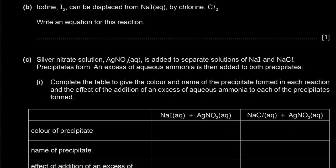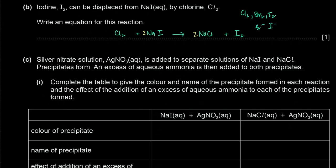Iodine can be displaced from sodium iodide by chlorine: Cl₂ + 2NaI → 2NaCl + I₂. This is a redox reaction. Chlorine is the strongest oxidizing agent of the halogens, and iodide is the strongest reducing agent of the halides. Chlorine is reduced from 0 to −1 and iodide is oxidized from −1 to 0.